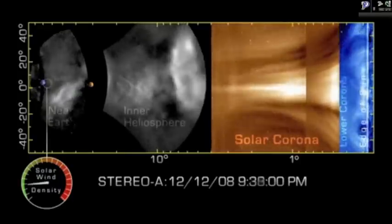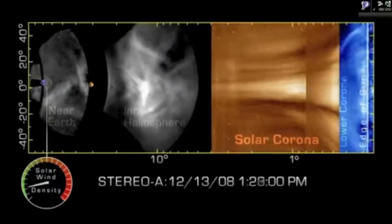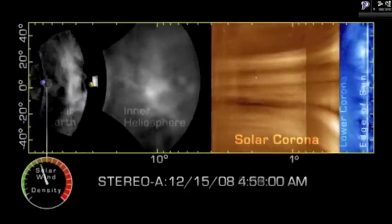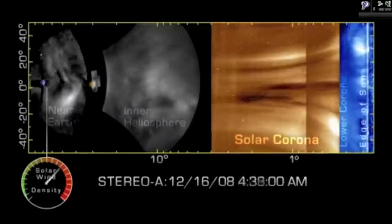This new ability to see developing space weather during its entire transit from the Sun will enable scientists to better predict when and how a CME will impact Earth, and understand how CMEs change between the Sun and our home.